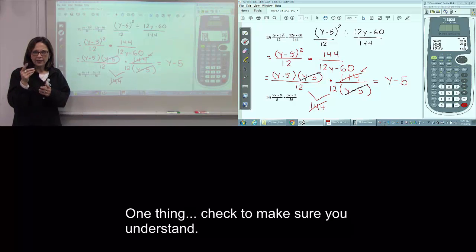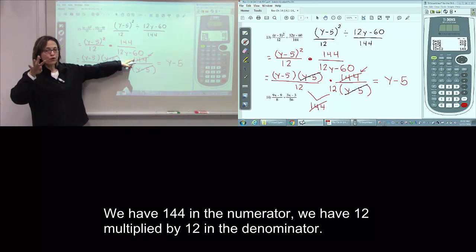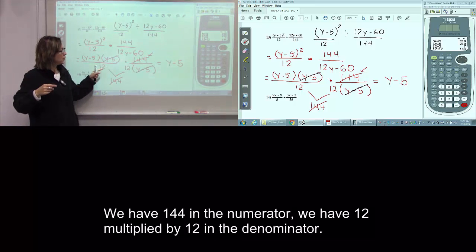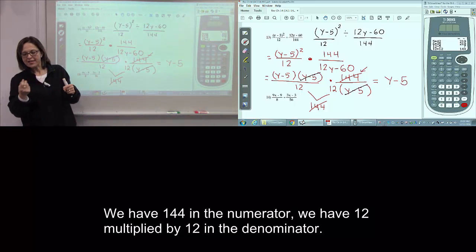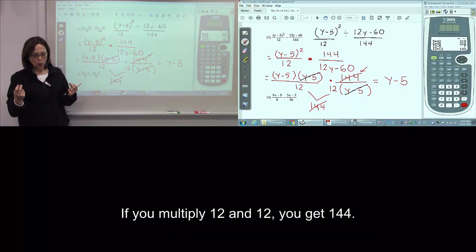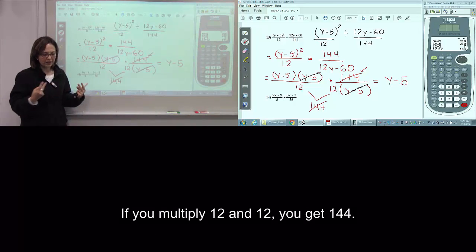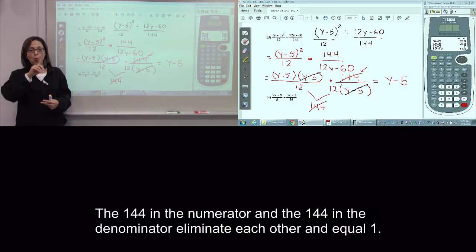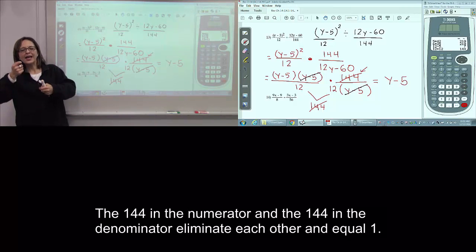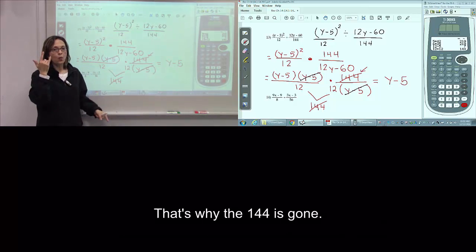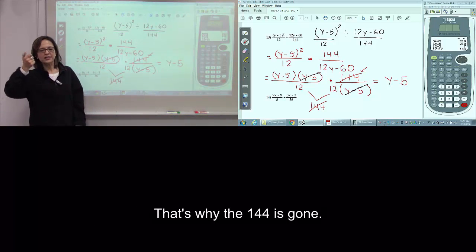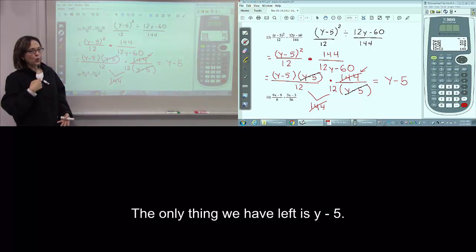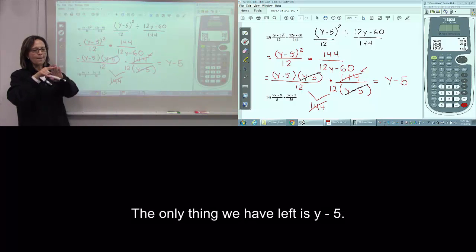Then, one thing. Check. Make sure you understand. We have 144 in the numerator. We have 12 and 12 in the denominator. If you multiply 12, 12 and 12 times is 144. Then 144, 144, eliminate. Then equals 1. That's why 144 is gone. And the only thing we have left is y-5.